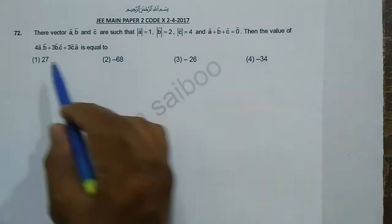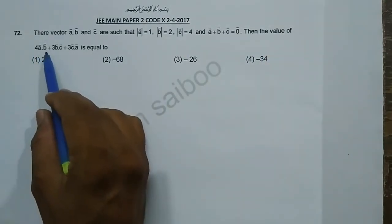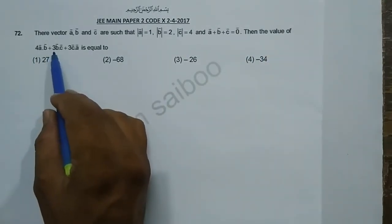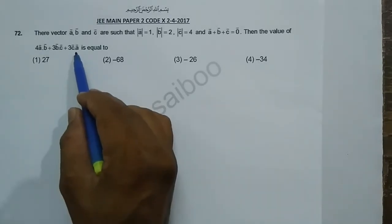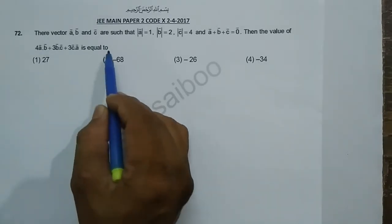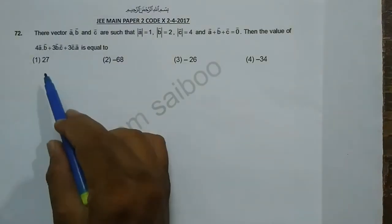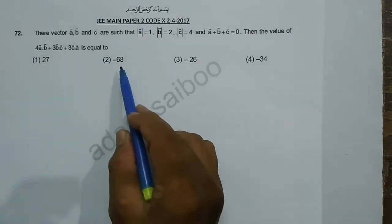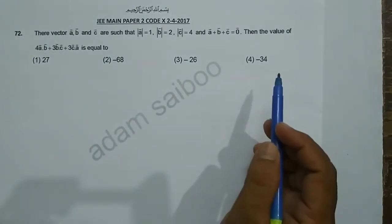Then the value of 4A·B + 3B·C + 3C·A is equal to how much? Here are all options: 27, minus 68, minus 26, minus 34.